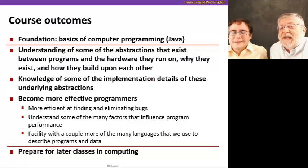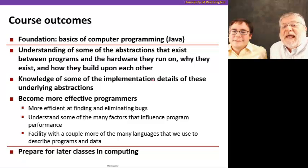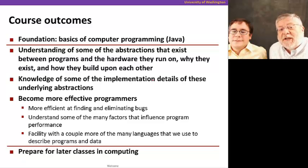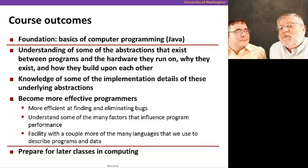So what are the outcomes of this course? As Luis said, we just expect you to have some of the basics of computer programming — nothing too fancy. Most of our students at UW know Java, but other languages are probably just as good. We are going to take you through this class to help you understand the abstractions that exist between programs and the hardware they run on — not only what those abstractions are, but why they exist and how they build upon each other. That's really the important aspect of this course. We'll take you through the implementation details of these underlying abstractions, and the hope is that this will make you more effective programmers, able to understand the many factors that influence a program's correctness and performance. In the end, we hope you'll be much better set up for future classes in computing with a solid foundation for how this stuff really comes together.